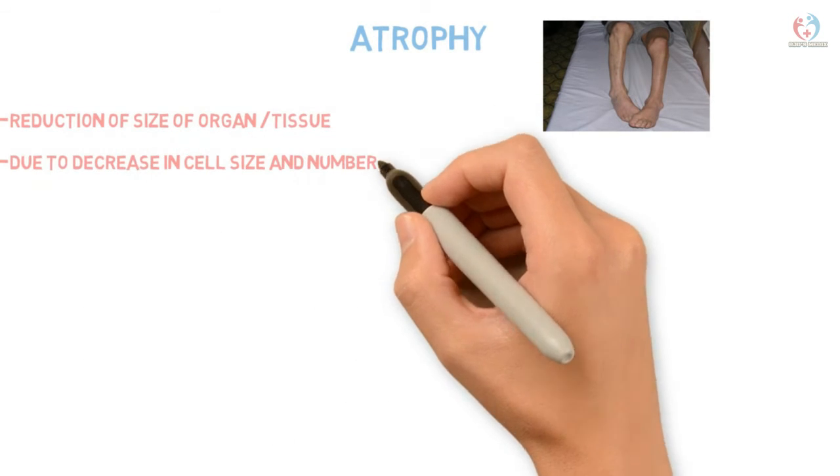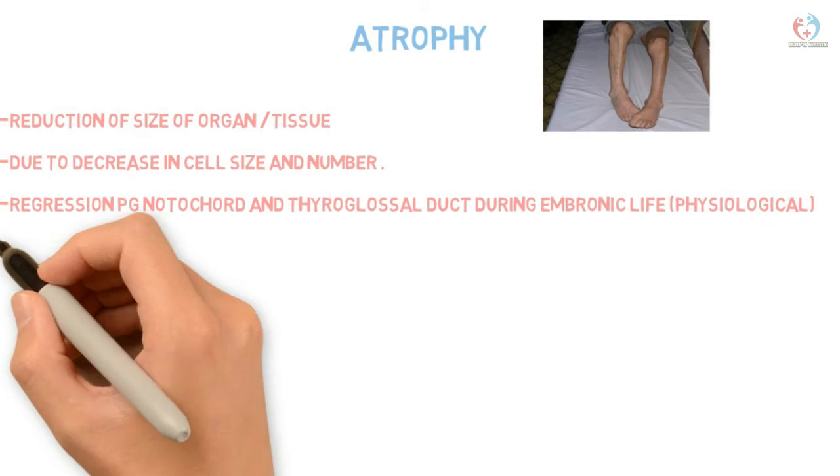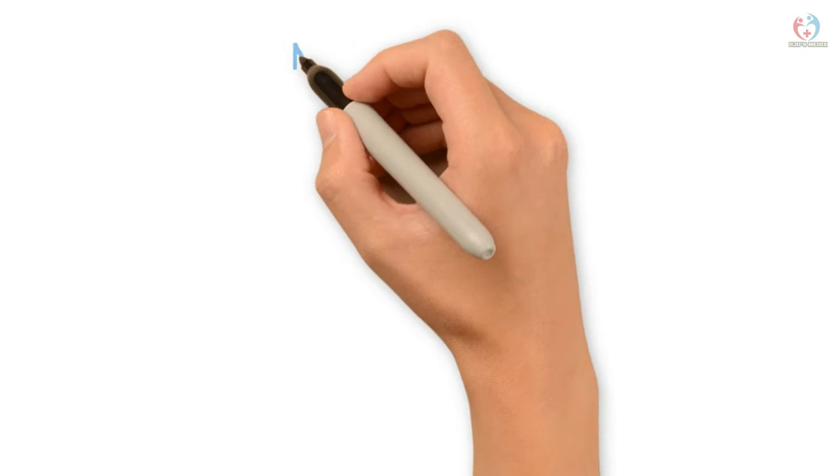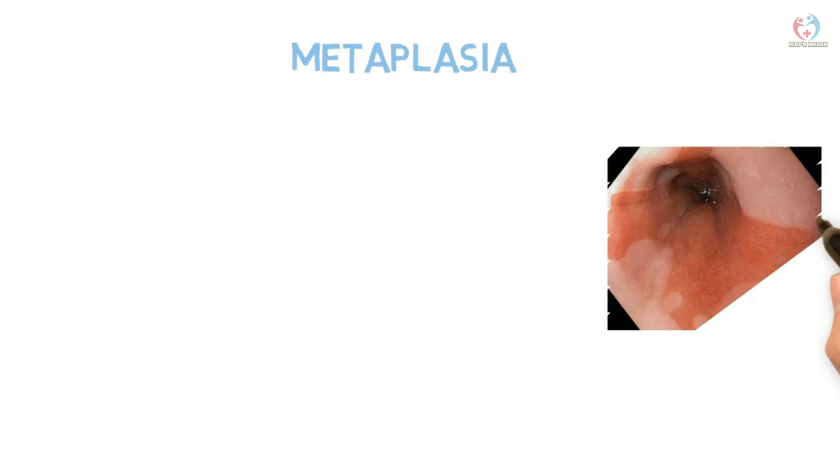Atrophy means reduction in the size of an organ or tissue, due to a decrease in cell size or number of cells. Examples of physiological atrophy include regression of the notochord and thyroglossal duct during embryonic life. Pathological atrophy includes cachexia, senile atrophy of the brain, denervation atrophy after nerve-damaging surgery, and disuse atrophy after prolonged immobilization such as fracture casting — also known as disease atrophy.